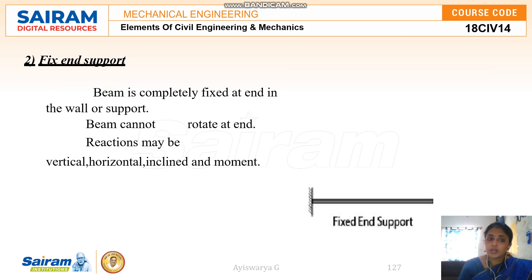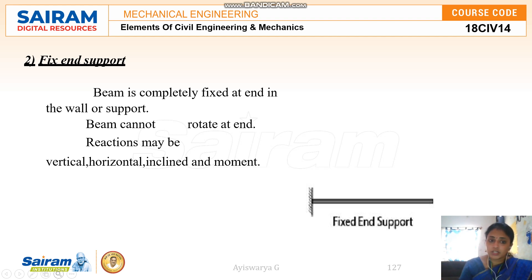Why I am relating types of beams with types of supports is because, after knowing the supports only, you can determine which type of beam it is. Based on the support only, the type of beam can be determined. For example, fixed beam means it will have fixed support at both ends. The type of loading — whether concentrated load, uniformly distributed load, or uniformly varying load — can be applied in any type of beam. But when it comes to the supports, the beam type is purely based on the support conditions.